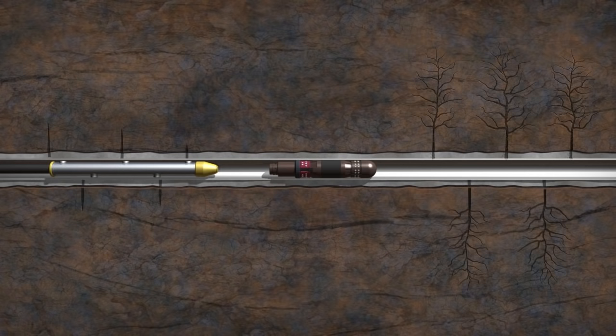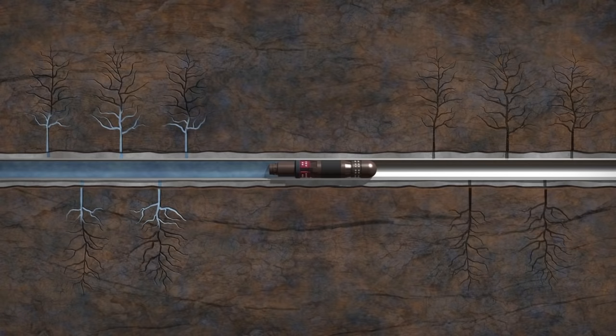The stage 2 hydraulic fracturing treatment is then pumped to treat the second set of perforations. This process is repeated along the entire length of the horizontal section of the wellbore.